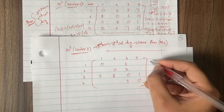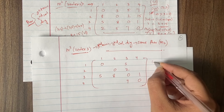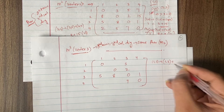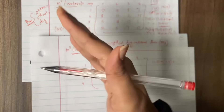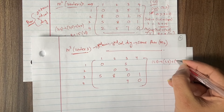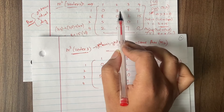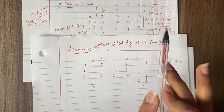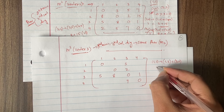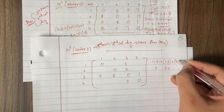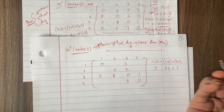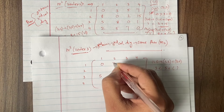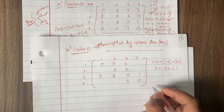Now let's find out the missing values. The first missing value is position (1,2). To go from 1 to 2 through vertex 3, you go from 1 to 3 and then from 3 to 2. M2 of (1,2) is 3, and M2 of (1,3) is 5 plus M2 of (3,2). Obviously 3 is the lesser value, so we take 3 directly.